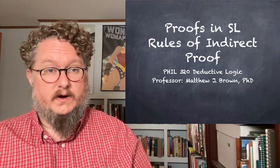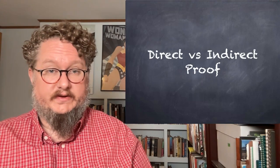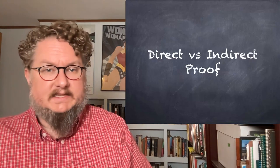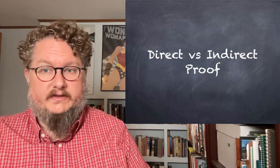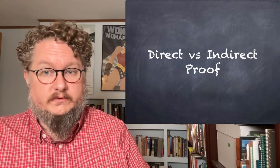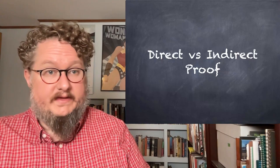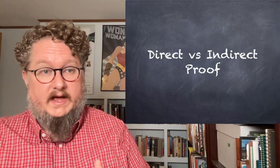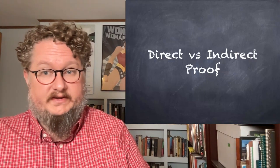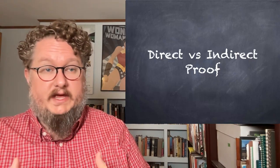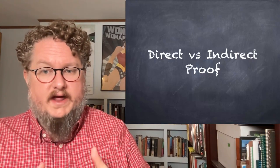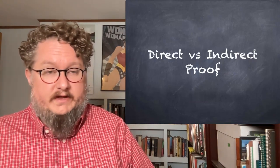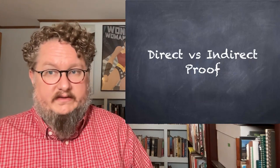Let me remind you of where we were at the end of last time, which is this distinction between direct and indirect proof. Direct proofs are the kind we looked at in our last lecture — they derive their conclusion from the assumptions using introduction and elimination rules and nothing else. Every intermediate step in the proof derives from the application of the rules to the premises and the prior intermediate steps. Indirect proofs, by contrast, in one way or another, introduce assumptions that are not there in the premises — additional assumptions which are not directly justified by a rule.